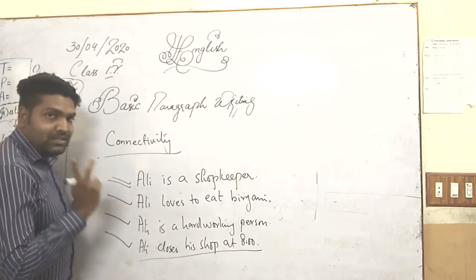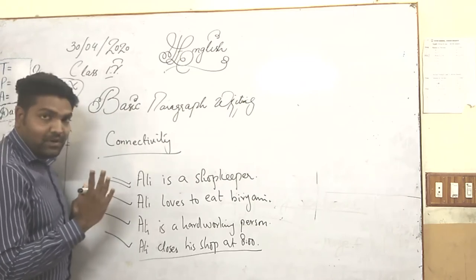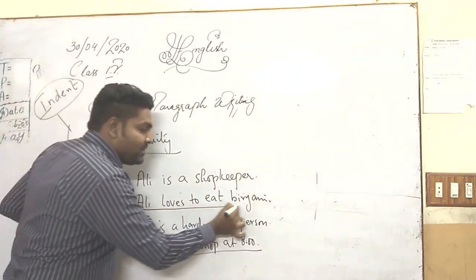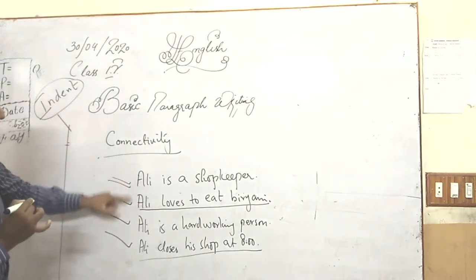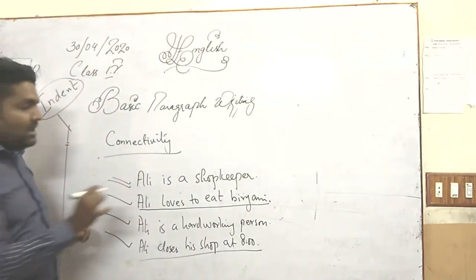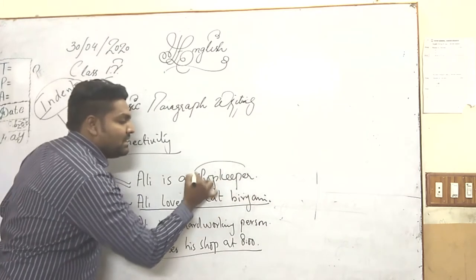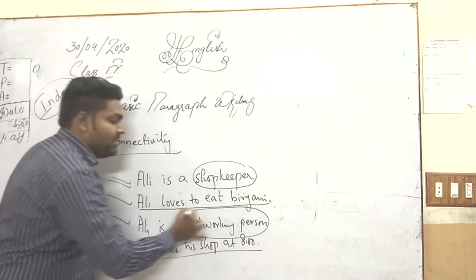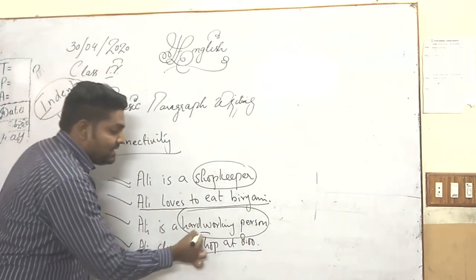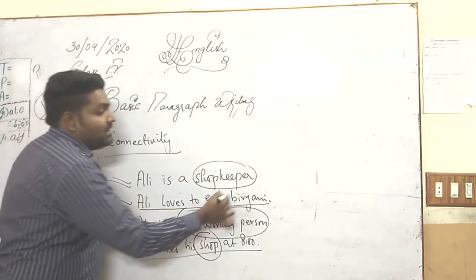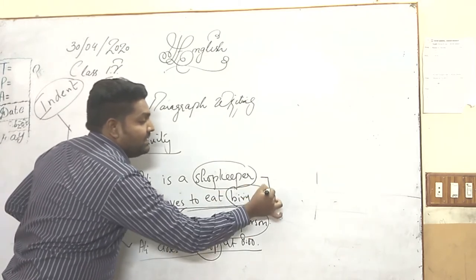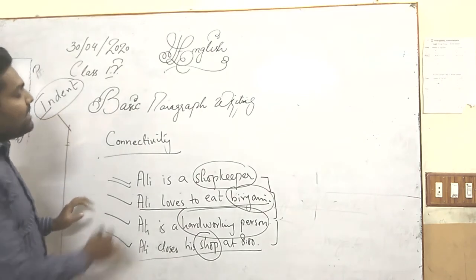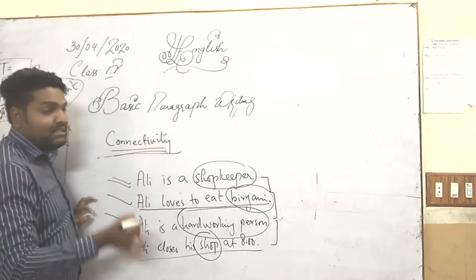Let me tell you — sentence number two is not related to the other three sentences. For example: Ali is a shopkeeper. Ali is a hard-working person. Ali closes his shop. Biryani is not related to these three sentences. So there must be connectivity between the sentences.